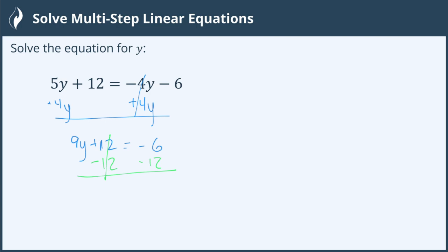And these will combine because they're like terms. I have 9y left on the left. This is canceling. Bring down my equal sign. And then these are like terms so I can combine them. Negative 6 minus 12.